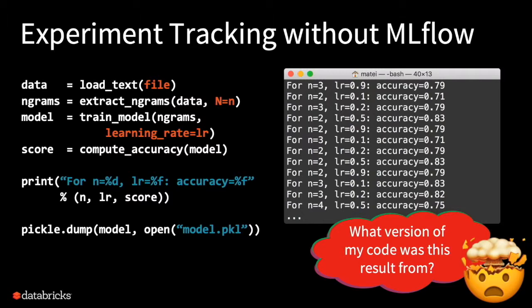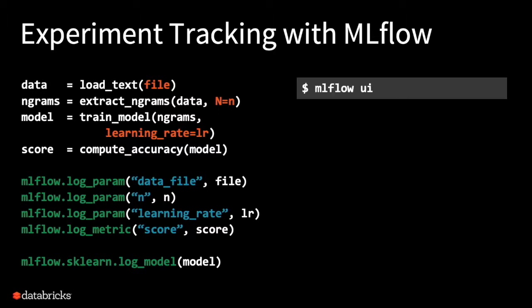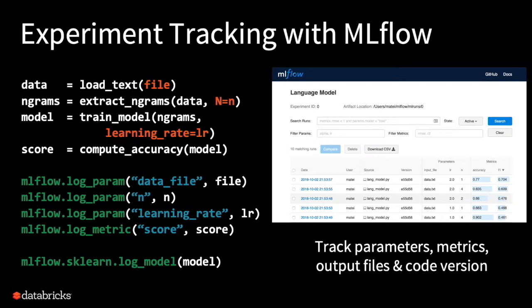To make this easier, we provide a structured logging API — the same way you'd use a logging API in software development. It's a Python API and also a REST API so you can call it from any language. It lets you log parameters, metrics, and models of different types. It also automatically picks up environment information like which git commit you're on. By default it logs to your machine, but you can also make it log to a server. Then you can type a single command to get a nice UI — a structured interface to search through this data, with an API to access the data as well.